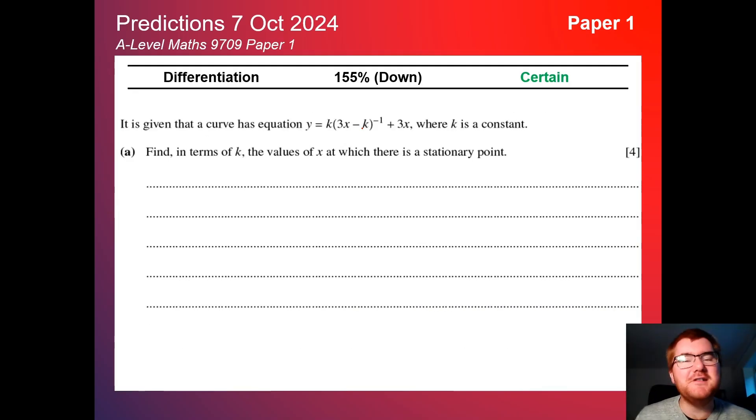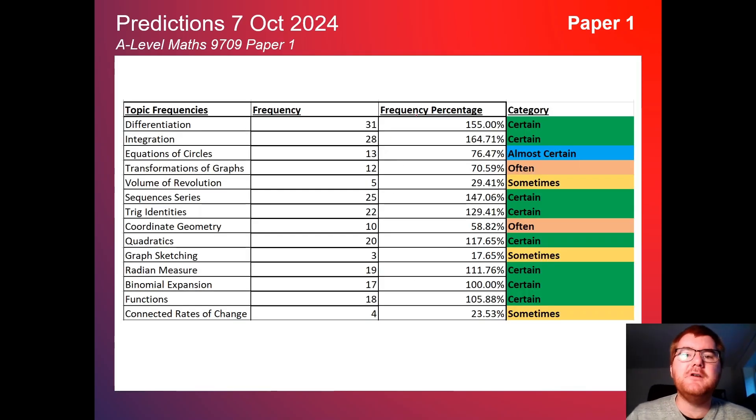And differentiation, of course, its twin here, 155%, slightly down. But again, a huge topic on paper one. Here is an example where you have to use differentiation for a stationary point - that is a key thing to revise. You can see the frequencies here through the last 17 papers, so you can get the exact frequency percentage that is appearing on these most recent papers from 2022 all the way through to the recent papers in 2024.